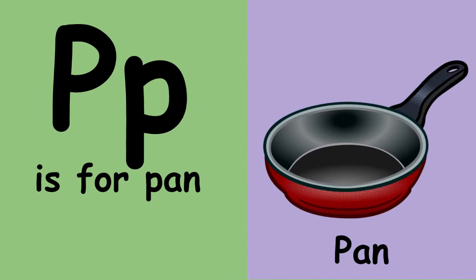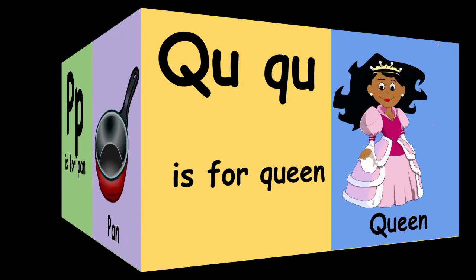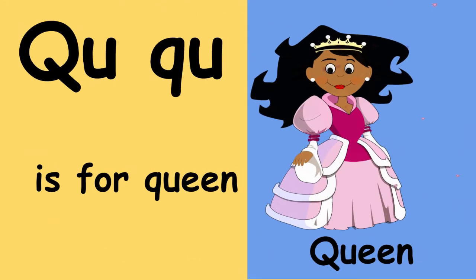P is for pan. P, pan, p. Q never goes anywhere without U. Q, U is for queen. Q, qu, queen.